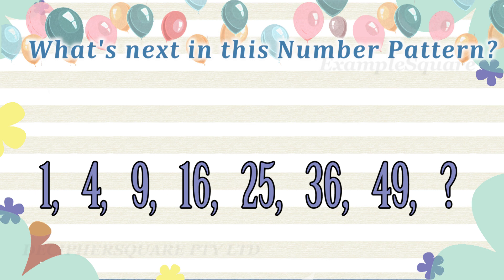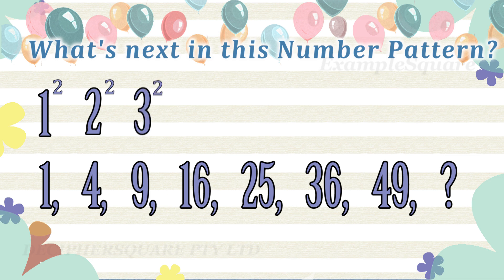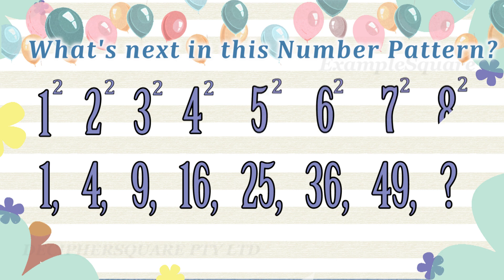The first number in the pattern is the square of one, the second number is the square of two, the third number is the square of three, the fourth number is the square of four, and so on. So the next number in the given pattern is simply eight squared, that is 64.